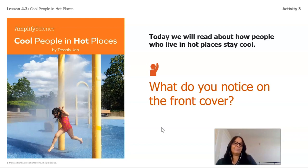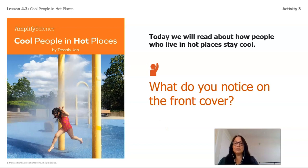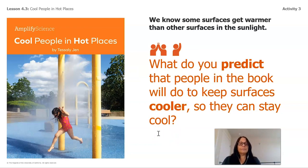By observation, I can think that it's hot outside. She's wearing a bathing suit and she's trying to stay cool because it is hot outside. We know some surfaces get warmer than other surfaces in the sunlight. What do you predict people in the book will do to keep surfaces cooler so they can stay cool? Think about that as I read.